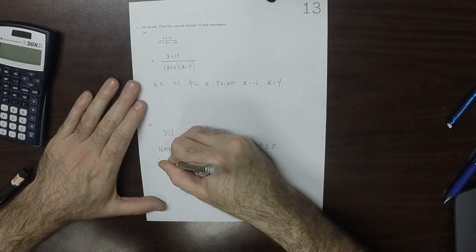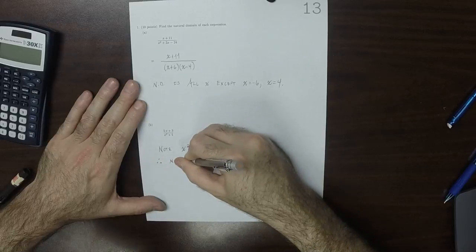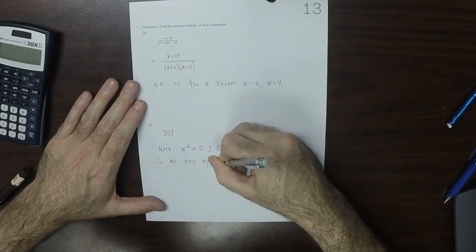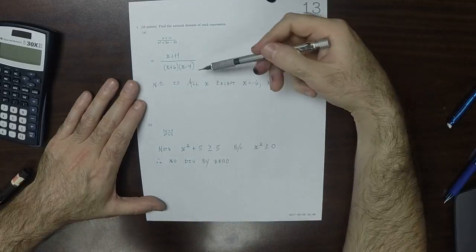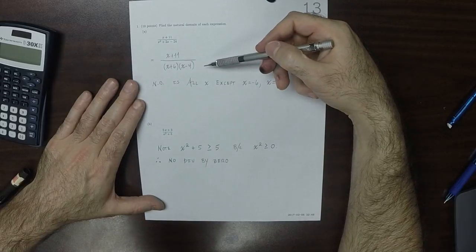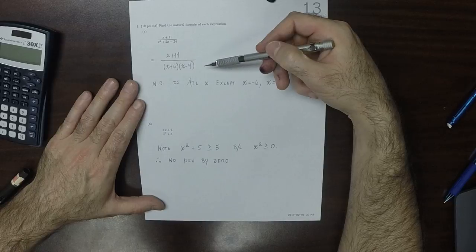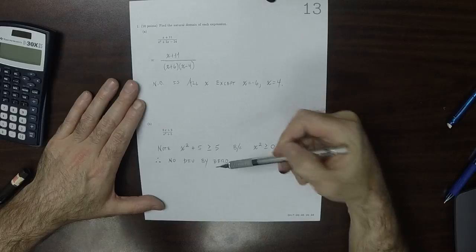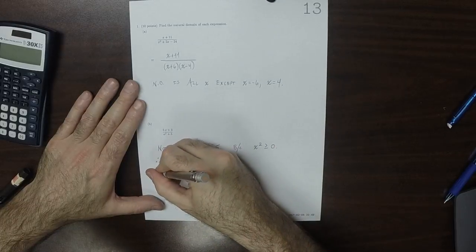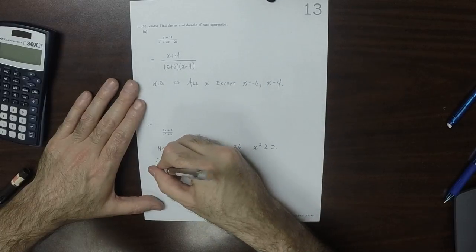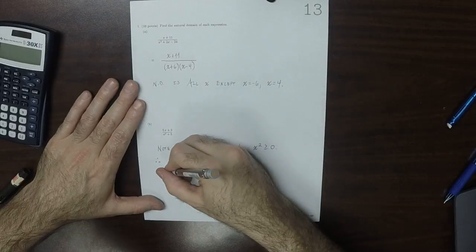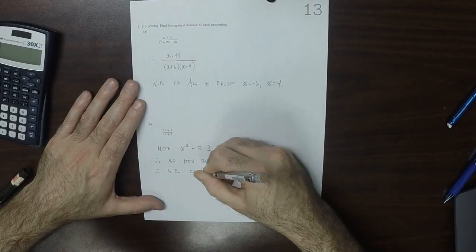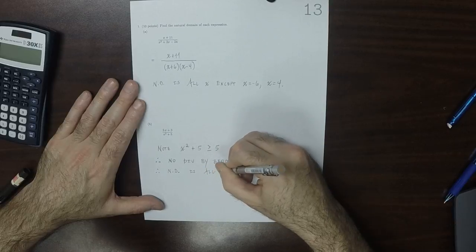And therefore, there are no divisions by 0 possible. Whereas on this one, the one above, you could divide by 0 at 4 and negative 6. But here, not possible. And therefore, for part b, the natural domain is all x.